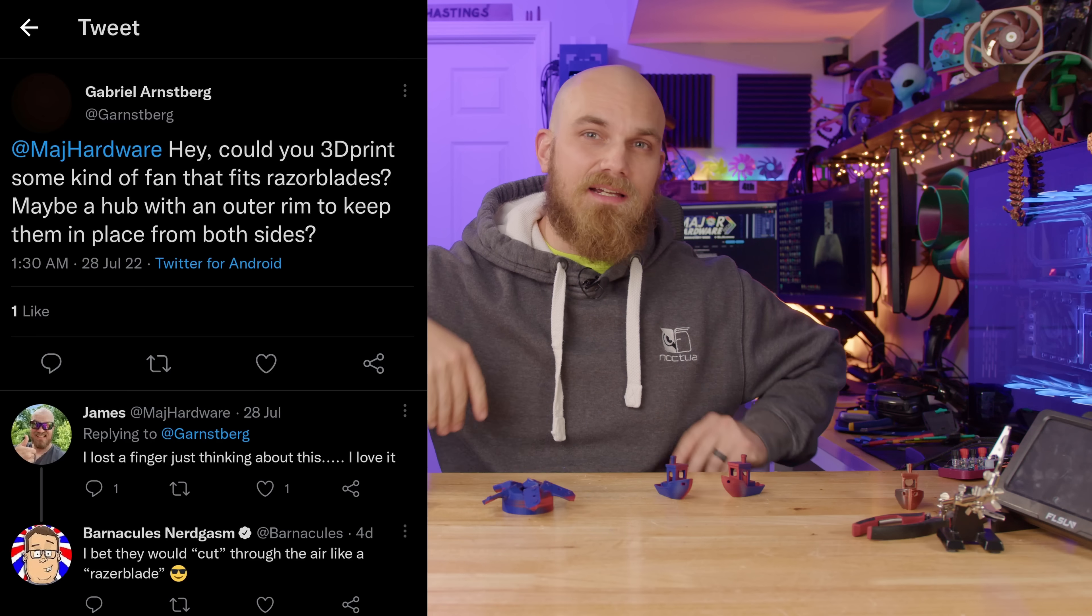And then we need a new fan to put them on. The 2000 RPM Noctua wasn't gonna cut it. So I went on Amazon and I found this thing. They said that this was a 120 millimeter PWM fan capable of 7,000 RPM. And I was like, geez, that's pretty fast. I will say though, after I got it, knowing that it said 7,000, I busted out the little RPM reader.